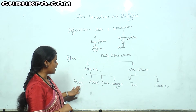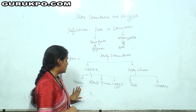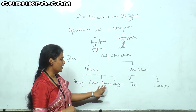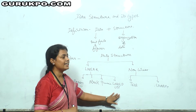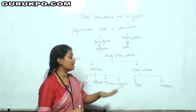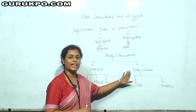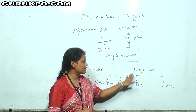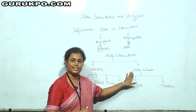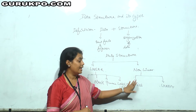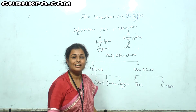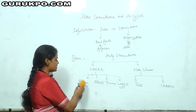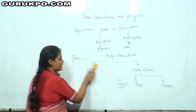Basically four types of data structure we will discuss: array, stack, queue, and linked list. In non-linear data structure, data is arranged in a non-linear fashion in memory — that is called non-linear data structure. In this we will discuss two types: tree and graph. Now we will start with our linear data structure.